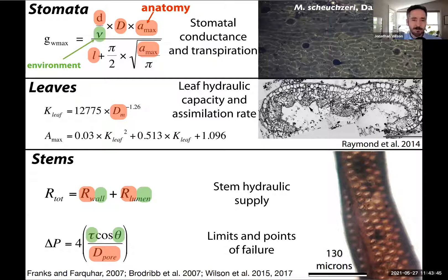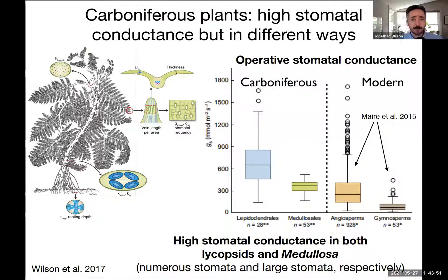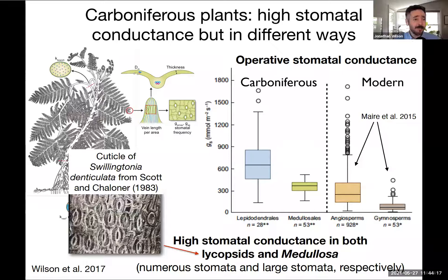Our leaf modeling shows that Carboniferous plants could transpire a great deal of water using different anatomical strategies. Lycopcids transpire through having many stomata on their leaves; medullosins transpire a lot through large stomata, and both are comparable to stomatal conductance and transpiration values we see in modern plants. For example, a cuticle image of Swillingtonia denticulata shows this lycopcid leaf has more than 25% of its surface cells as stomata. These values from parameterizing leaves and stems provide critical parameters for a process-based approach to ecosystems and their effects on the planet.